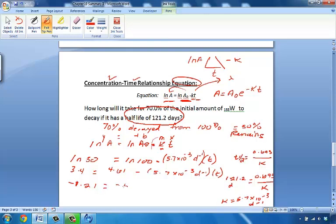So, negative 1.21 equals negative 5.7 times 10 to the negative third inverse days times time. Negative and negative will just cancel out to make positive. And now we're going to divide 1.21 by 5.7 times 10 to the negative third inverse days. And that will give us days rather than inverse days for time.